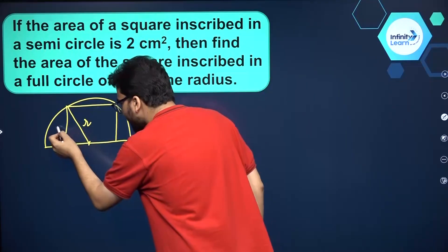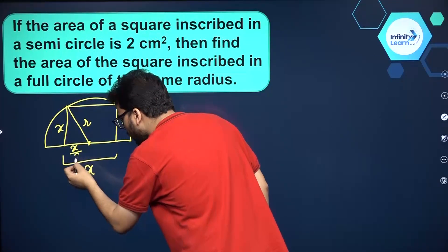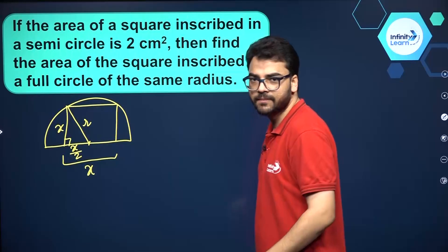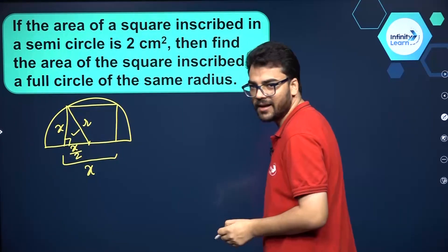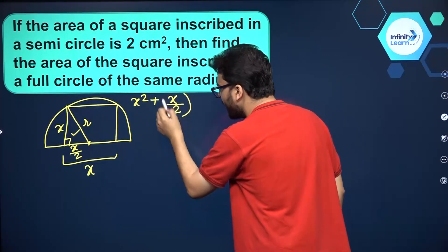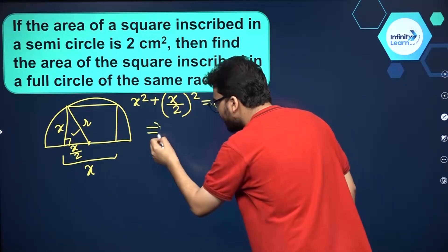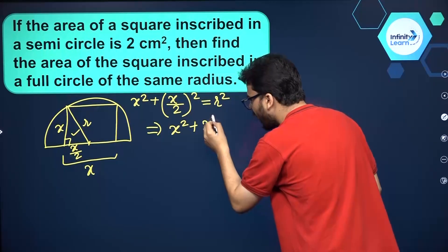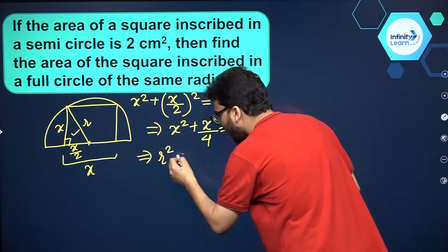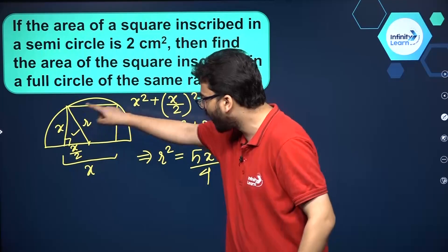Suppose the side of the square is x centimeters, so obviously this side will also be x, and I can say that this half-base will be x by 2. Since it's a square, this angle will be 90 degrees. Now we can use the Pythagorean theorem in this right-angled triangle: x squared plus (x/2) squared equals r squared. Simplifying: x squared plus x squared by 4 equals r squared, so r squared equals 5x squared by 4.